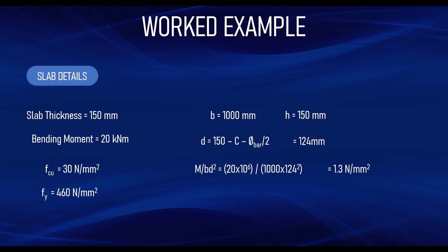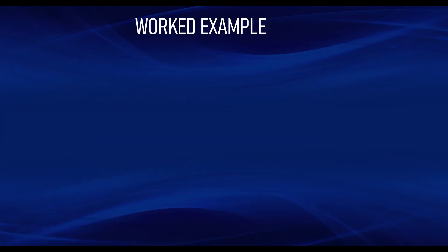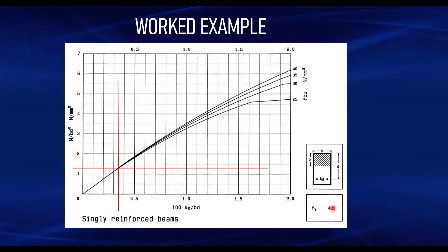In the design chart, the vertical axis is M/bd² and we read it against the characteristic compressive strength of concrete fcu. Here fcu = 30 N/mm². Since fy = 460, we select the design chart for fy = 460. The chart covers an fcu range from 25 to 40 N/mm²; for fcu above 40 it is better to use the design equation. On the vertical axis I read M/bd² = 1.3, and trace horizontally to the fcu = 30 line.